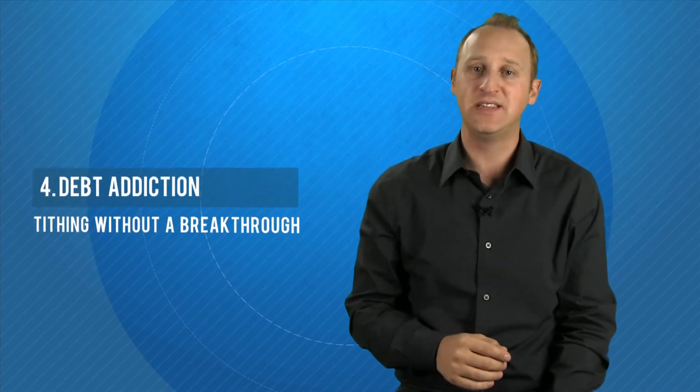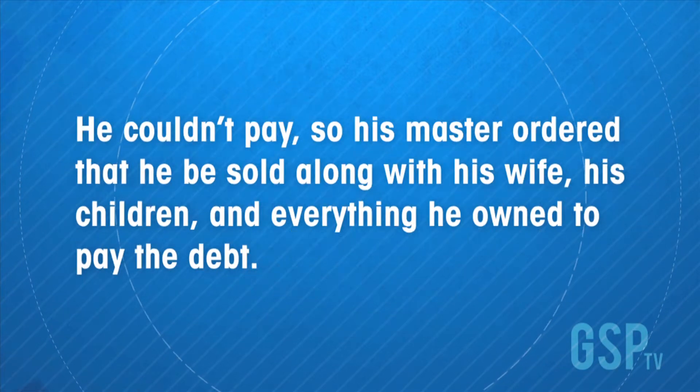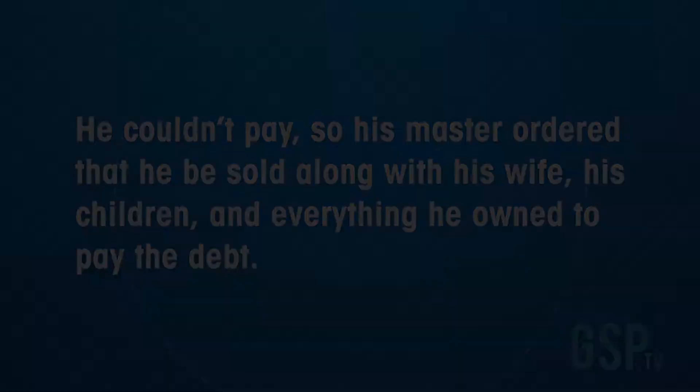Matthew 18 says this, therefore the kingdom of heaven can be compared to a king who decided to bring his account up to date with servants who had borrowed money from him. In the process, one of his debtors was brought to him who owed him millions of dollars. He couldn't pay. So his master ordered that he be sold along with his wife, his children, and everything that he owned to pay his debt. Now here's the deal. You're probably saying, well, this is a whole passage about forgiveness. And it is. But within all these passages that we have on forgiveness, there are also other principles that we can take out of it. Here's the thing. This man would never have been in this parable and this story if he didn't owe the money to begin with. He never would have been threatened to pay or he was going to be sold with his wife and his children and everything he had if he wasn't in that kind of heavy debt to begin with.